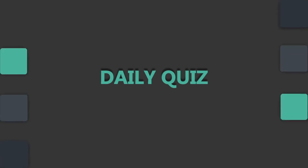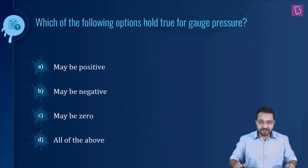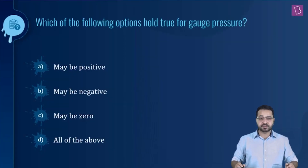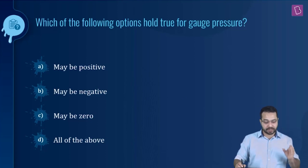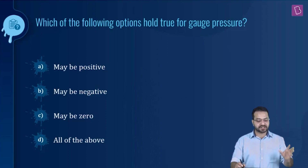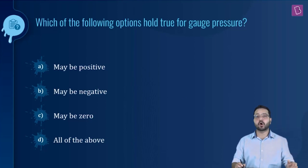The next question is: which of the following options hold true for gauge pressure? The options are: it could be positive, maybe negative, maybe zero, or all of the above.